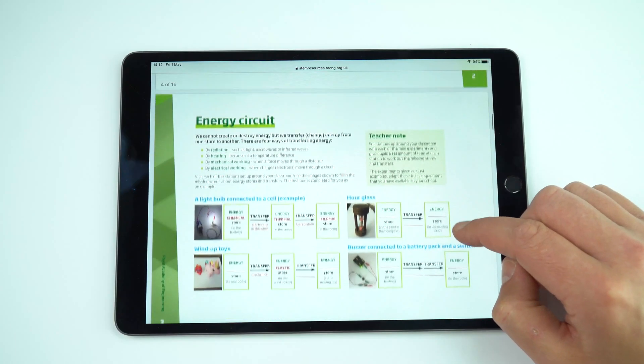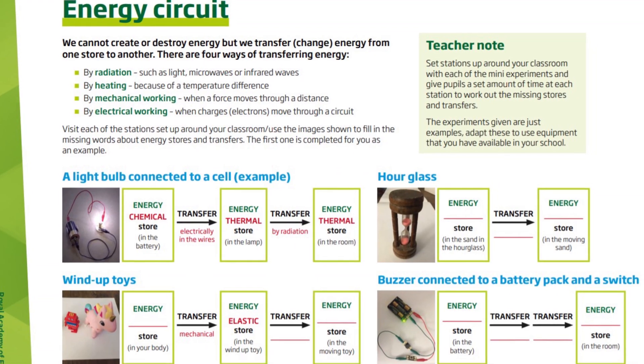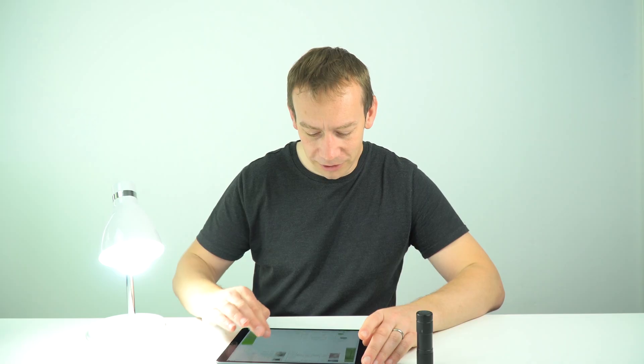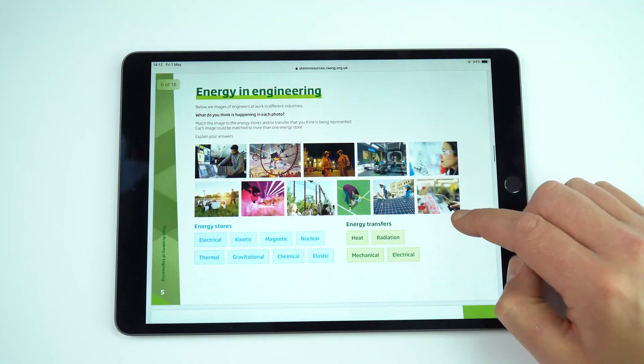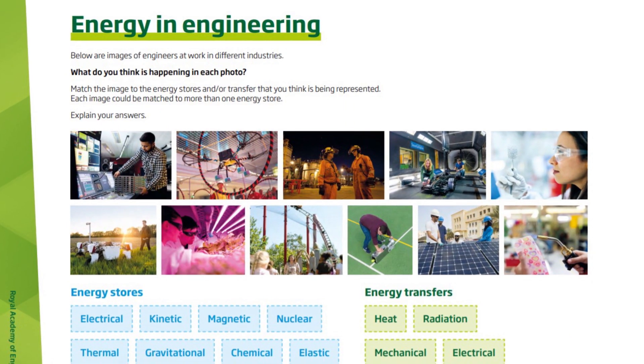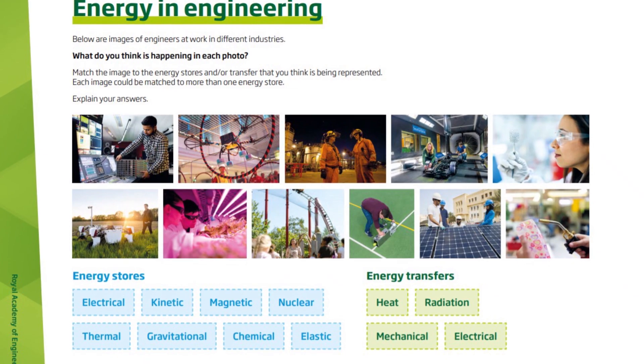It then goes on to a really nice activity with an energy circuit. In school you might be able to set this up using real-life examples, but even at home students will have things like lamps and torches as well as wind-up toys, meaning they can bring this science to life to think about how energy is stored and then transferred from one store to another. It also links up quite nicely with careers in engineering — there's a great task where students can look at some images and try to identify energy stores and transfers in different careers that real engineers actually take part in.